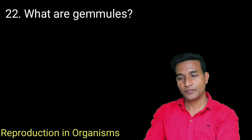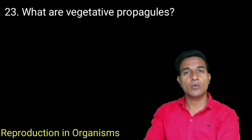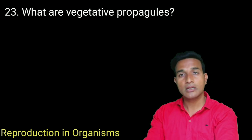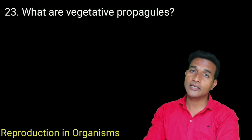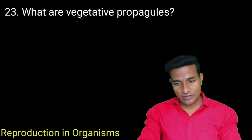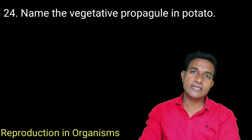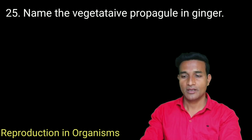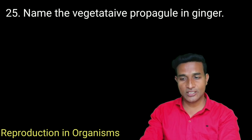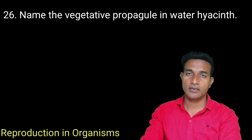What are gemmules? They are asexual reproductive bodies in sponges. What are vegetative propagules? The units of vegetative propagation in plants which are capable of giving rise to new offspring are called vegetative propagules. Name the vegetative propagule in potato — it is the eye or tuber. Name the vegetative propagule in water hyacinth — it is offset.